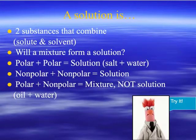A solution is formed by combining two substances: one being a solute and one being a solvent. A solute is the thing that's being dissolved, and a solvent is the thing that's doing the dissolving. So, will a mixture form a solution? If we mix two polar substances together, they form a solution, such as when we mix salt and water. The salt dissolves into the water — the salt is the solute and the water is the solvent.